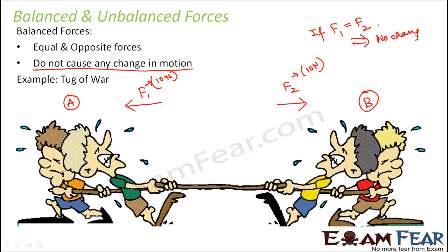So when equal and opposite forces act on a body, a stationary body remains stationary and a moving body keeps moving — there is no change in motion. These are called balanced forces. It is not always necessary that force causes a change in motion, because here both teams are applying force, yet there is no change. Force can also cause a change in shape, which we will discuss later.